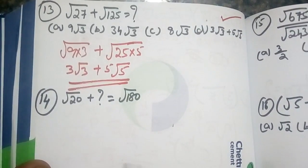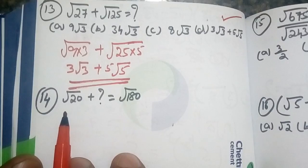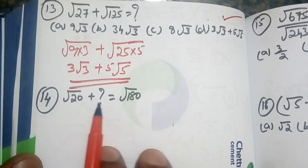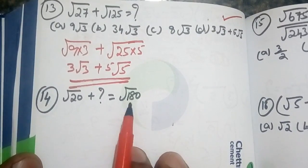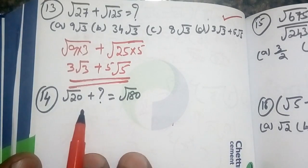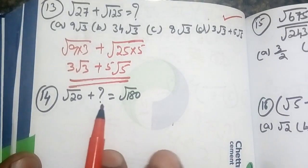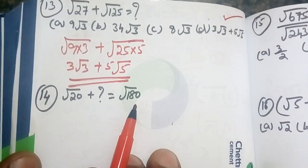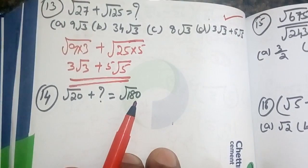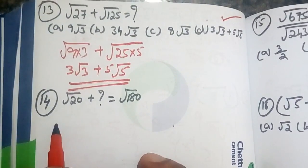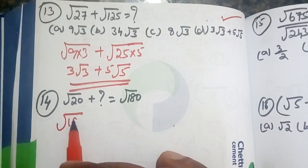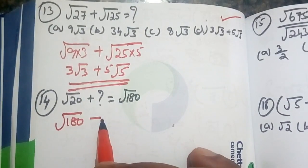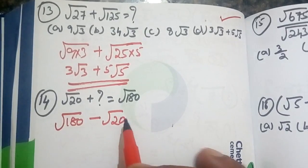Now we are going to go to question number 14: root 20 plus question mark is equal to root 180. So, root 20 plus what equals root 180? We rearrange to get root 180 minus root 20.